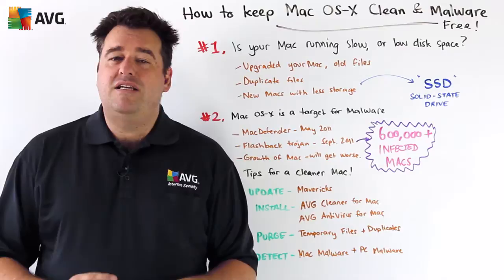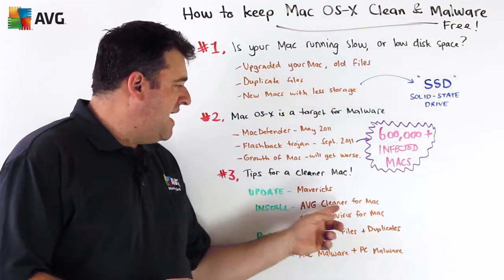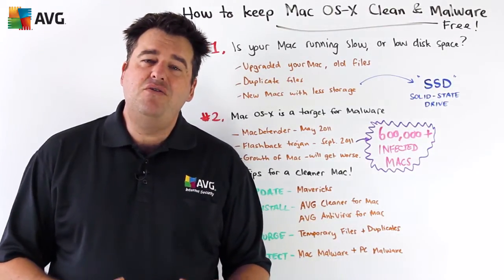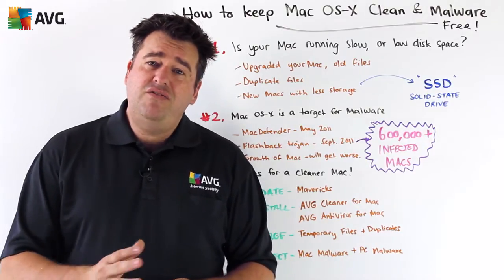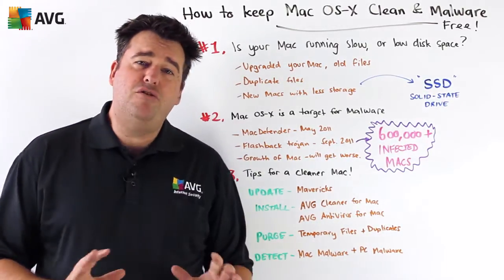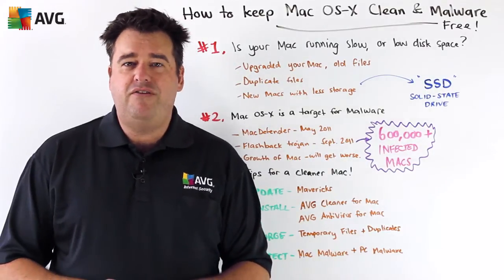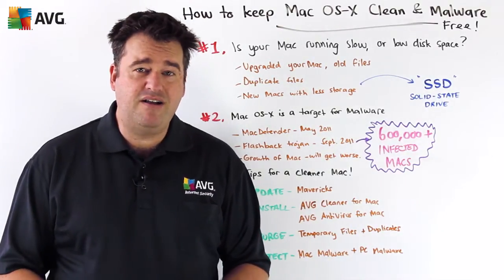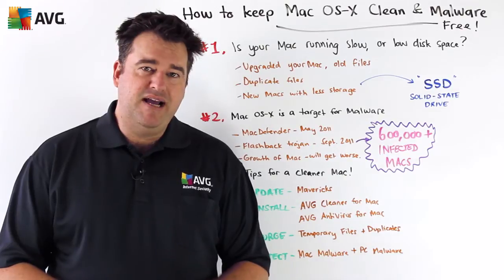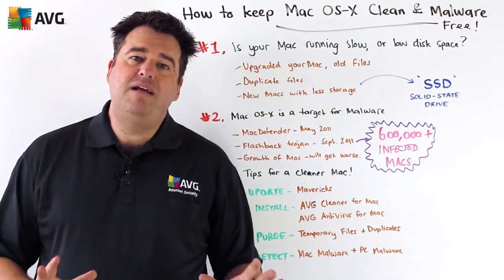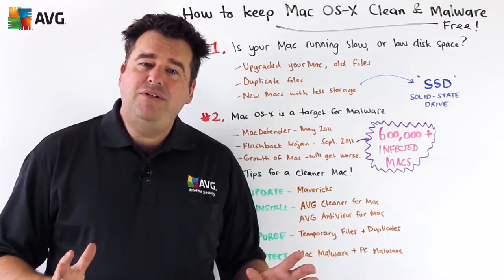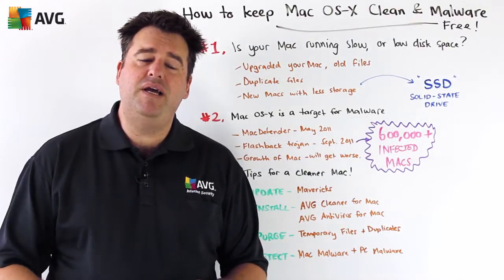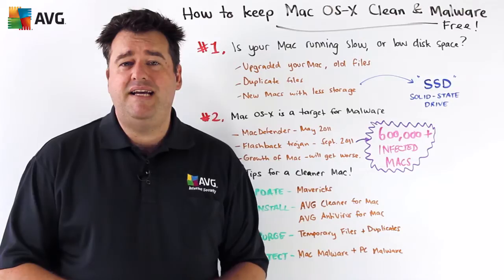The next thing is to install some free apps from AVG. One of them is called AVG Cleaner for Mac, and the other one is called AVG Antivirus for Mac, and these are available for free in the App Store. Once you've installed these apps, you'll be able to purge your Mac of any temporary files that are wasting hard disk space, and also search for and identify duplicate files that are wasting valuable disk space. And the best part is that you'll be able to detect Mac malware if and when it pops up, and also be able to detect PC-based malware. No doubt you'll be sharing files with friends and family members who are using PCs, so it's important that you keep them protected as well.